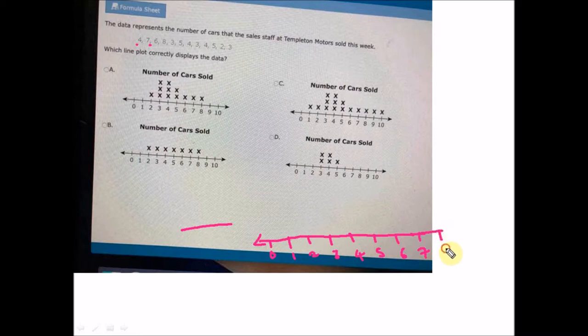The first sales staff sold four, so we're going to put a star on that four. The second sold seven, we put another star here. The third sold six, we'll put a star on the six. The fourth sold eight, we'll have a star here. Then the fifth sold three cars.